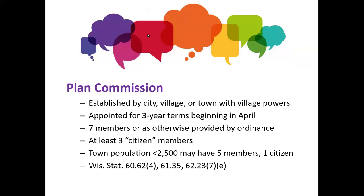When I say plan commission, there are actually many different commissions, committees, and boards throughout the state that may have similar names and similar roles, so I want to make sure we're all on the same page. Plan commission is typically a term used by cities, villages, and many towns that have adopted village powers. Typically, a plan commission has seven members, of which at least three are required to be citizen members. However, towns with a population less than 2,500 may reduce that to five members. Plan commissions are typically appointed for three-year terms beginning in April.